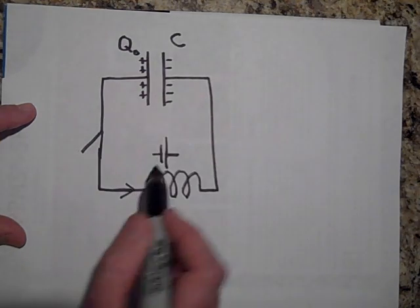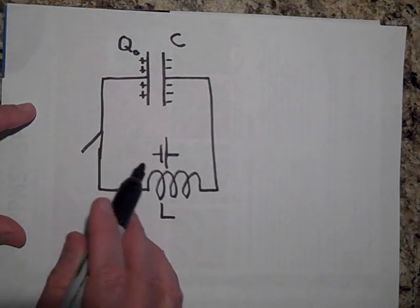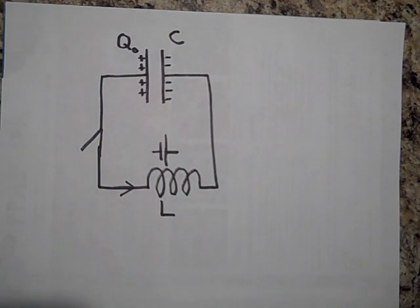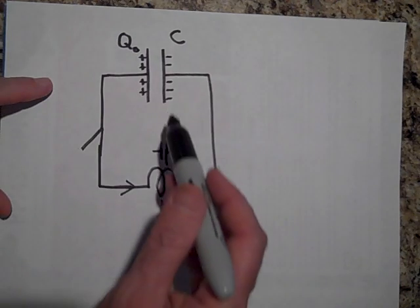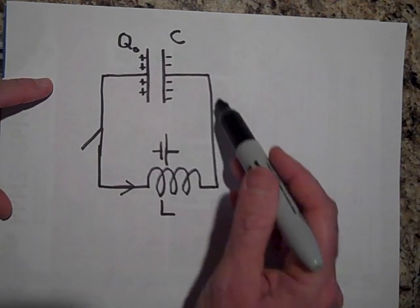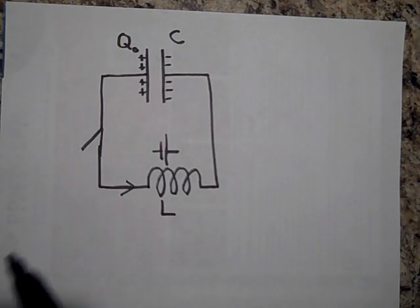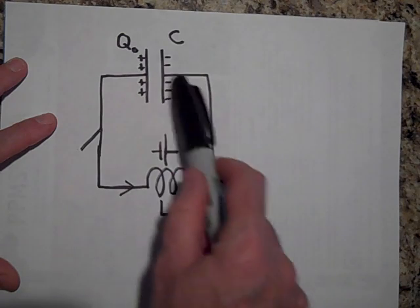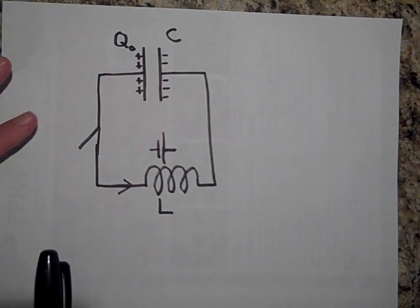And so it actually charges this positively. That battery is going to push so much that it charges that positively. At that point, this thing just comes back around and does the exact same thing in the other direction.